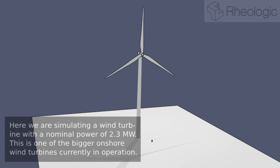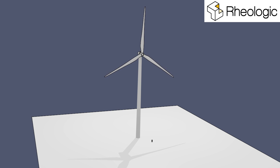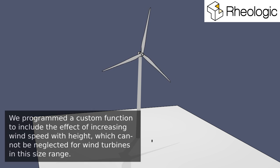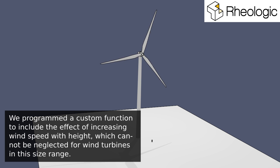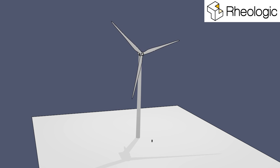Here we are simulating a wind turbine with a nominal power of 2.3 megawatts. This is one of the bigger onshore wind turbines currently in operation. We programmed the custom function to include the effect of increasing wind speed with height, which cannot be neglected for wind turbines in this size range.